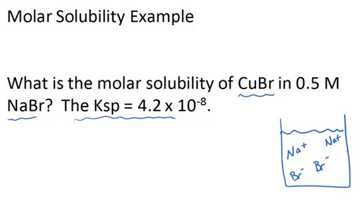And that means that the bromide ion concentration in this beaker to start off is 0.5. So that's the bromide ion concentration.